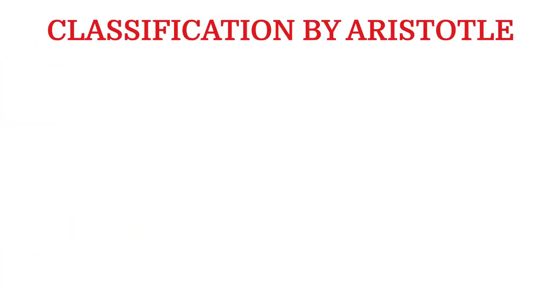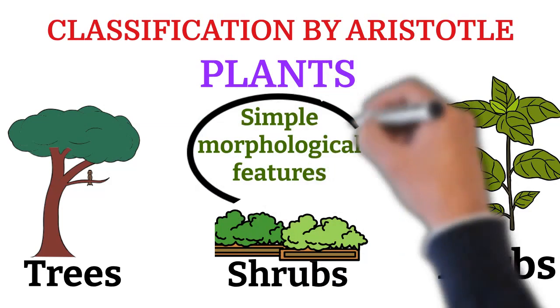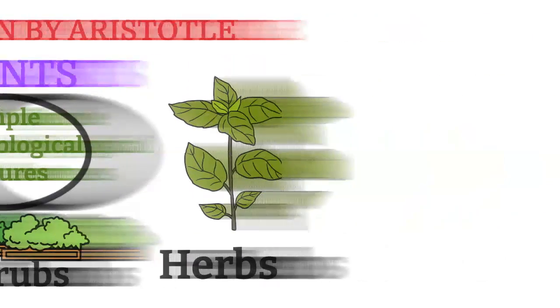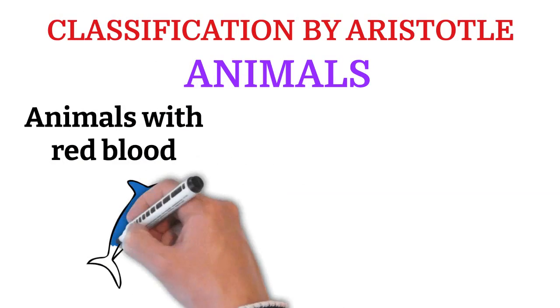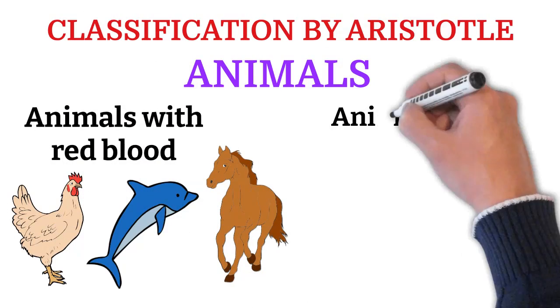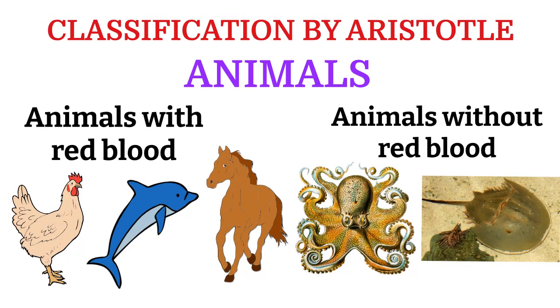He classified the plants into trees, shrubs, and herbs, based on simple morphological features. Likewise, he also classified animals into two groups, i.e., animals with red blood and animals without red blood.